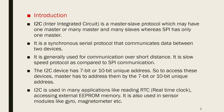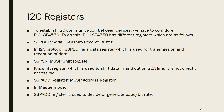There is a slight difference compared to SPI, where there is only one master. I2C is a synchronous serial protocol that communicates data between two devices, generally used for communication over short distances. It is a slow-speed protocol compared to SPI. Each device has a 7-bit or 10-bit unique address. It is used in many applications like reading RTC, accessing external EPROM memory, and in sensor modules. Communication is carried out through registers.